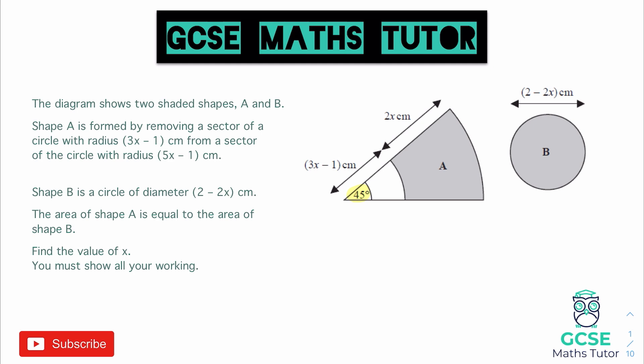To start with, we need to find the area of shape A by thinking about the area of a sector. The formula is pi r squared multiplied by the angle over 360 — sometimes written as theta over 360. The angle in this question is 45 degrees. So 45 over 360 as a fraction can be simplified. Dividing the top and bottom by 45 gives us 1 over 8. So we are looking at 1 eighth of a circle.